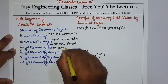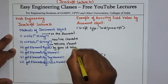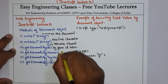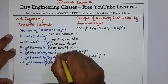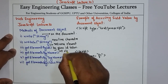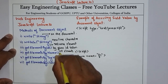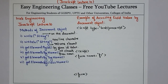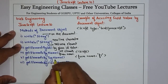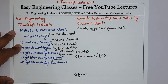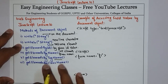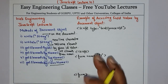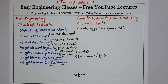जैसे हमने पहले paragraph का id use किया था। Then we have getElementByName — it returns all elements having the given name। जितने भी elements जिनका नाम same है वो सबको return करेगा। Similarly getElementByTagName returns all the elements with the given tag name, और getElementByClassName returns all the elements with the given class name। तो इन सबको use करके आप अपने document object को dynamic content provide कर सकते हैं।